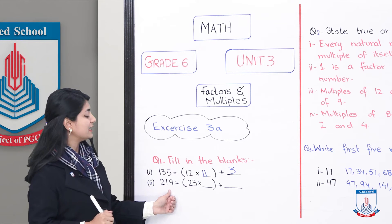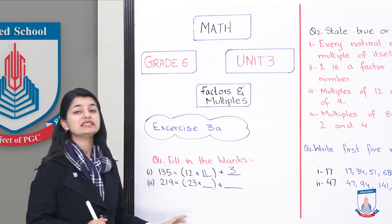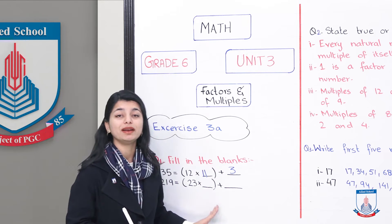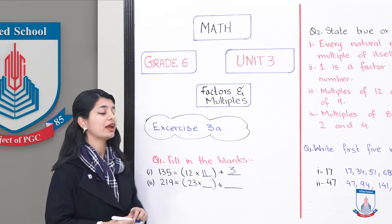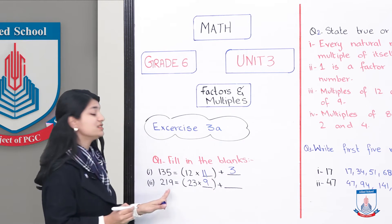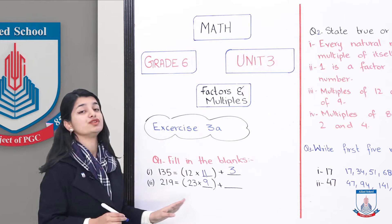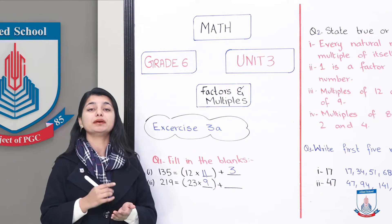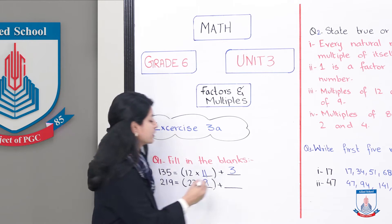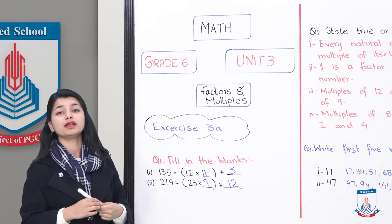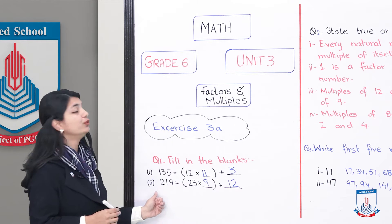Second one: 219 equals 23 into dash, plus dash. You will find that 23 multiplied by 9 is 207. It doesn't reach 219, but it comes to 207. When you subtract 207 from 219, you get 12. So the answer is: 23 multiplied by 9, plus 12, equals 219.